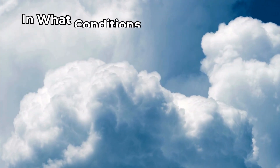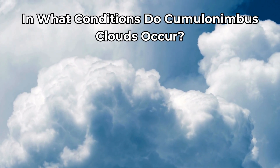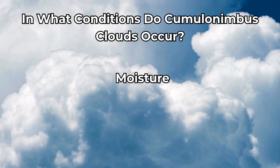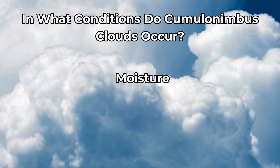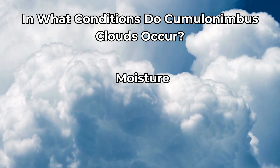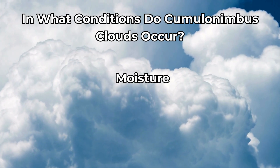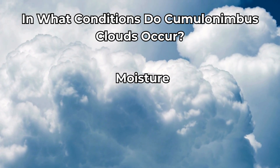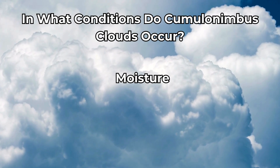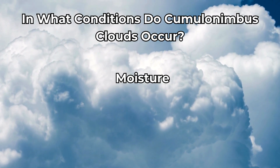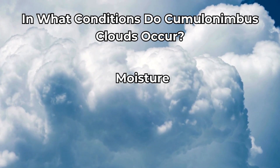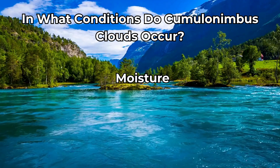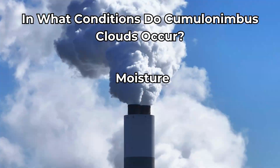Cumulonimbus clouds can be found the world over and require only three basic things: moisture, unstable air, and a trigger. Without moisture, cumulonimbus clouds can't form. Drier areas like Nevada or Arizona see fewer thunderstorms, while tropical climates and areas surrounded by water see an increased chance of thunderstorm activity. Moist air can also travel thousands of miles as an air mass. Sources of moisture include the sea, large lakes, large rivers, lush vegetation, forested areas, and air masses from other regions.